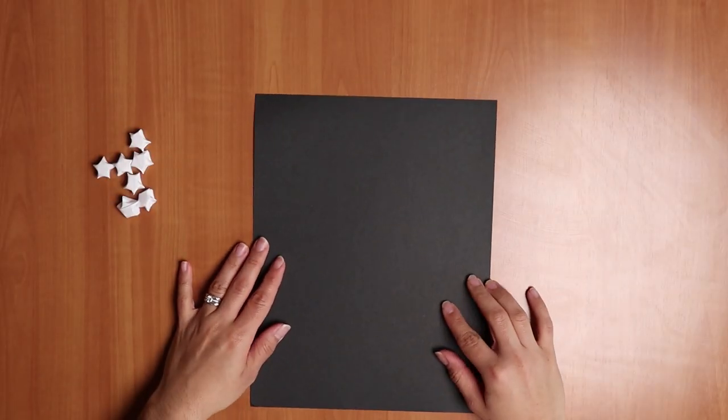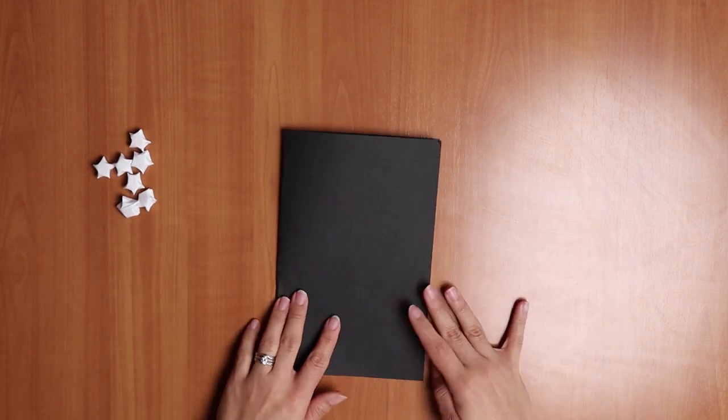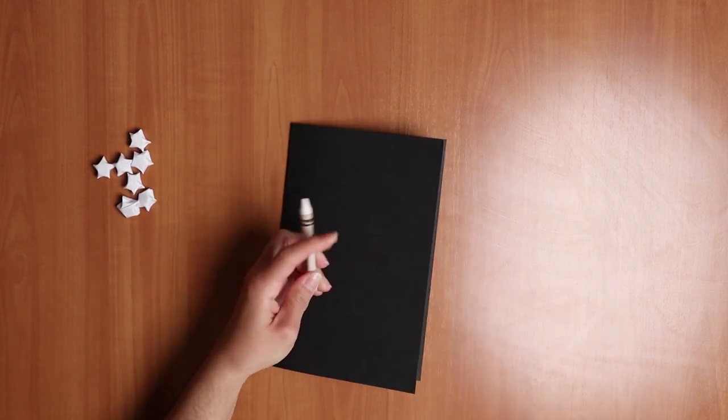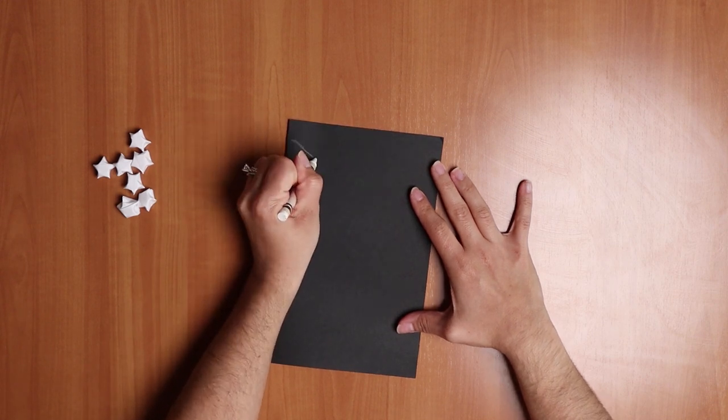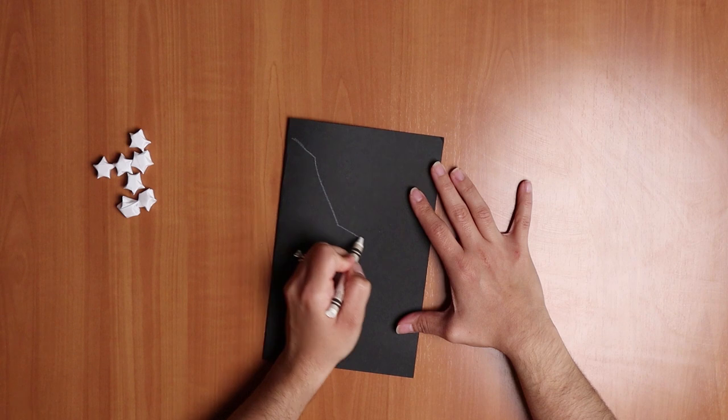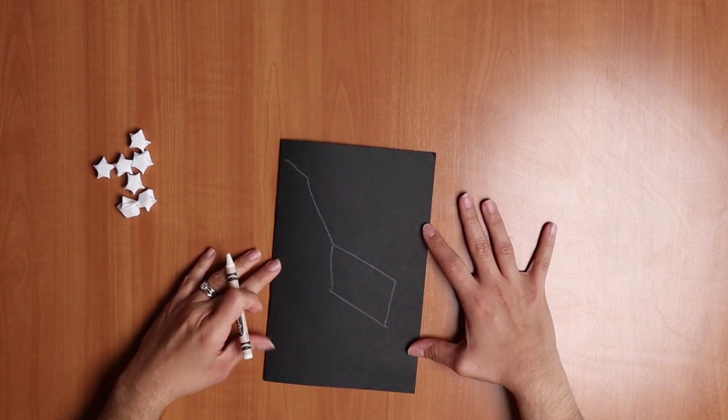Take the black cardstock paper and fold it in half horizontally to create a card. Use the white crayon to draw the constellation you would like to create. You can use a pencil to trace your constellation before you use the white crayon. For my example, I am going to make the Little Dipper.